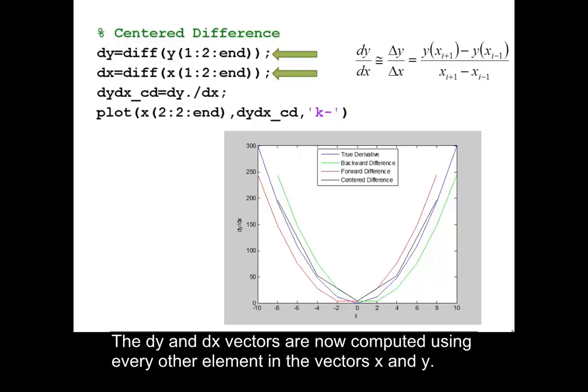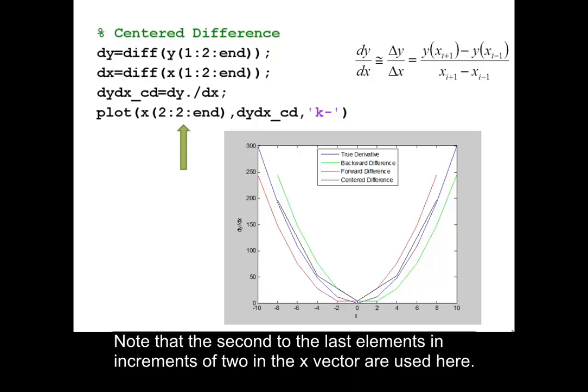The dy and dx vectors are now computed using every other element in the vectors x and y. Note that the second to the last elements in increments of 2 in the x vector are used here.